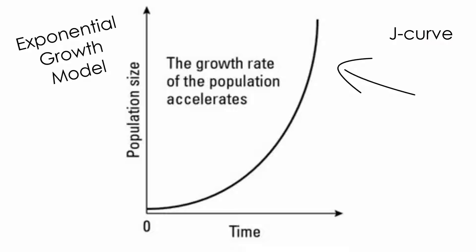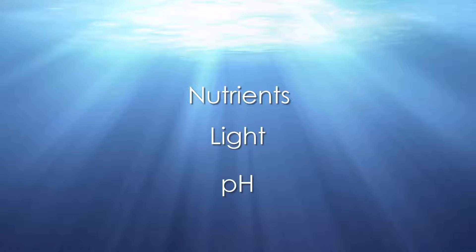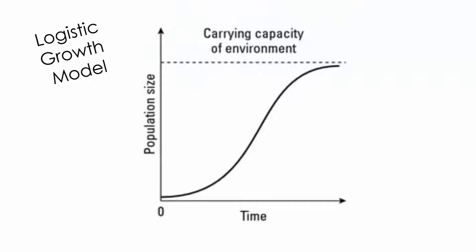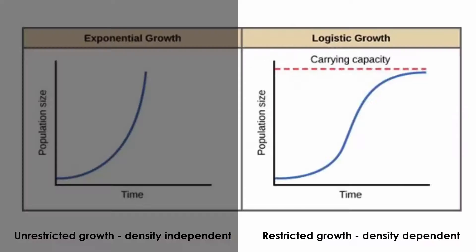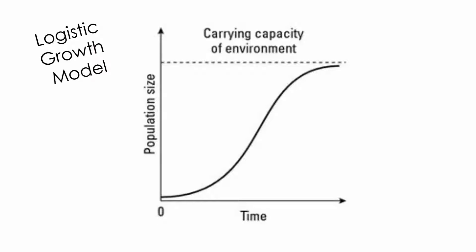But in reality, the growth of most phytoplankton populations depends at least in part on available resources in their environments — nutrients, light, and pH, for example. To model more realistic population growth, scientists developed the logistic growth model, which illustrates how a population may increase exponentially until it reaches the carrying capacity of its environment. When a population's number reaches the carrying capacity, population growth slows down or stops altogether. In the logistic growth model, population size levels off because the limiting resources restrain any further growth. This model applies in particular to populations that respond to density dependent factors. As you can see in the figure, the logistic growth model looks like the letter S, which is why it is often called an S-curve.